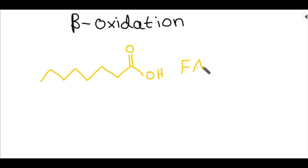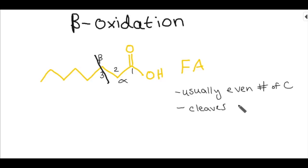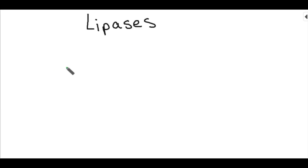Next we have beta oxidation — overall what happens. First you have a fatty acid with an alpha carbon and a beta carbon. The beta carbon is at the third carbon from the oxygen head. The bond is going to get cleaved at the beta carbon during beta oxidation. Fatty acids often have an even number of carbons.